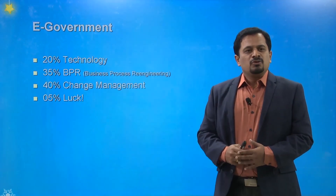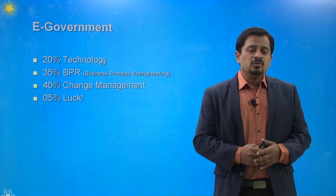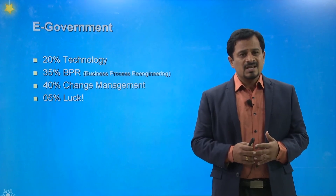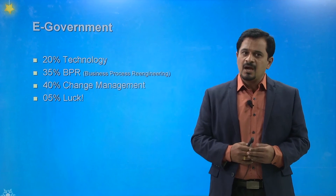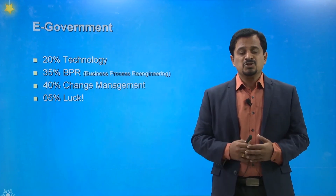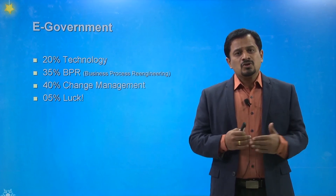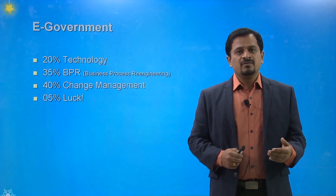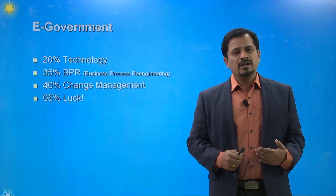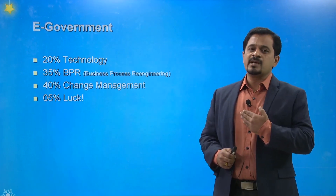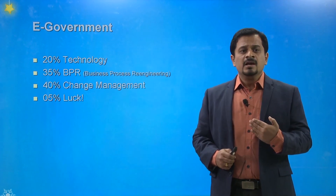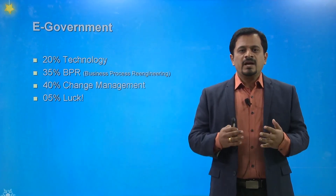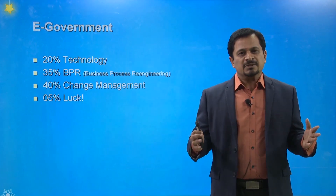From the government's implementation perspective, only 20% of the effort involves technology, 35% is business process re-engineering (BPR), 40% is change management, and only 5% is allowed for other aspects. Most countries are trying to implement e-government, and China, India, and many others have successfully done so by concentrating on all four areas: G2C, G2E, G2B, and G2G. This enables a better e-government that provides all services to all citizens in the country.